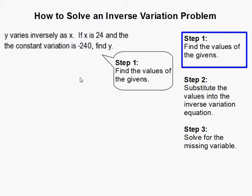We should always write down the values of the givens. In this case, x is given to us as 24, and the constant is negative 240.